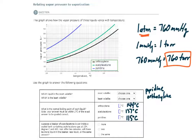Finish it up. Suppose a beaker of acetyl acetone is put inside a sealed tank containing acetyl acetone gas at 134 degrees Celsius and 400 torr. After 10 minutes, will there be more liquid in the beaker, less liquid, or the same amount? Well, if I look to see where that point is, 134 degrees, and I come up to the 400 torr mark, which is right here. I see that it's below.